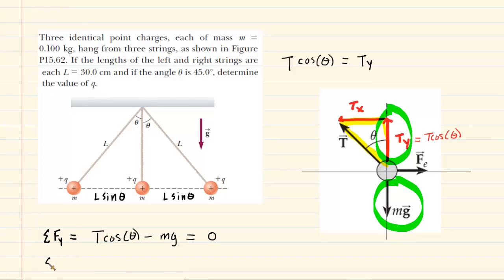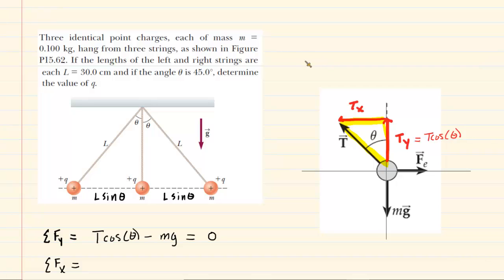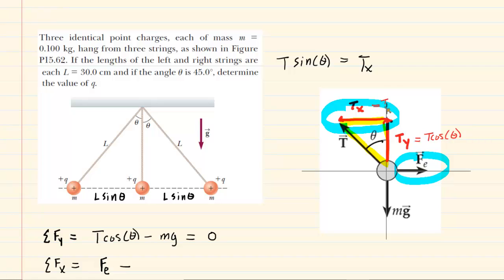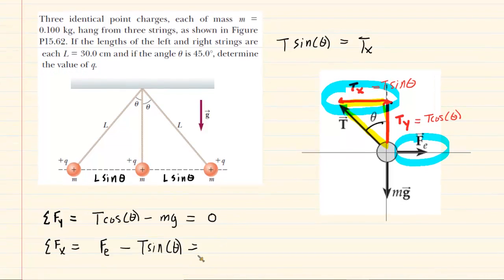Now let's look at the X direction. The sum of forces in the X direction equals zero as well. We need an expression for TX. Using right triangle trigonometry, the sine of theta equals the opposite side TX over the hypotenuse T. Multiplying both sides by T, the Ts cancel, giving TX equals T sine theta. The forces acting exclusively in the X direction are TX and the electrostatic force FE. The electrostatic force points to the right, so it's positive: FE minus TX, which is minus T sine theta, equals zero.